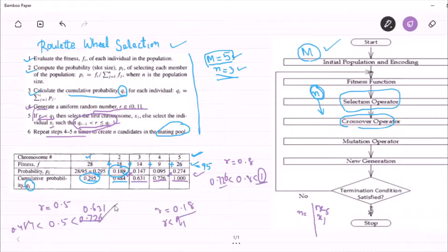Therefore, the individual corresponding to 0.631 will be selected into the mating pool. What is that? X3. Clear?